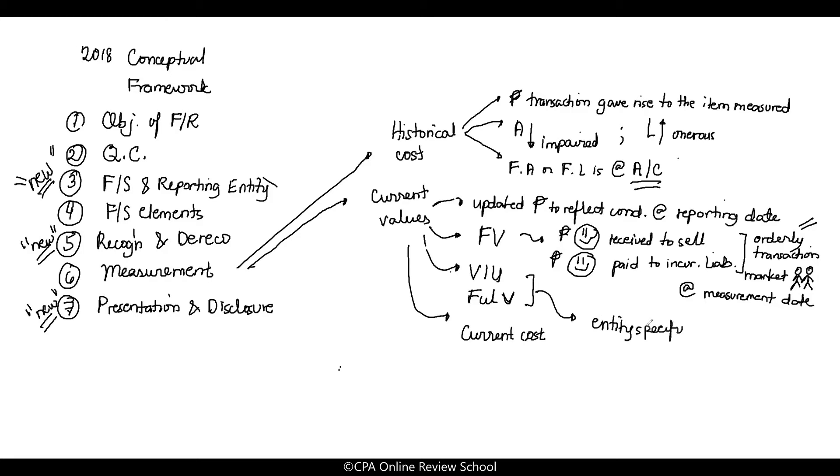What does entity specific mean? It's computed by the entity. What does entity specific mean? Current expectations. So this refers to amounts determined by the entity about current expectations related to the amount.